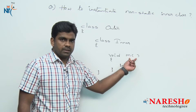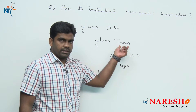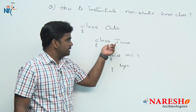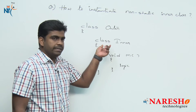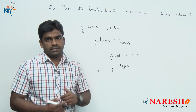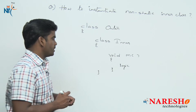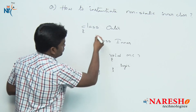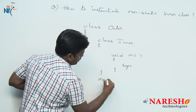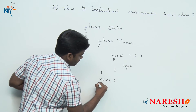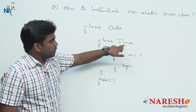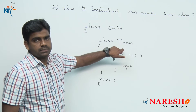To access a non-static method, an inner class object is required, and the inner class is also a non-static inner class. So we need to create an object for the inner class with the help of the outer class. First, in this case, we are writing a main method in the outer class. From the outer class, you cannot directly create an object for the inner class.